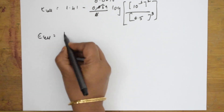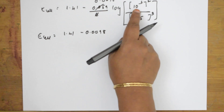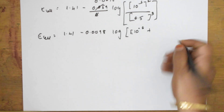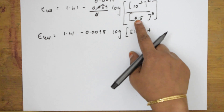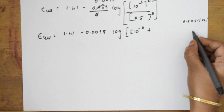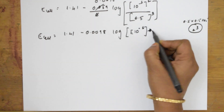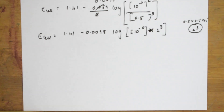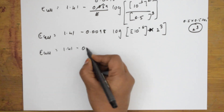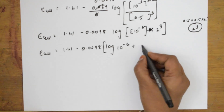So E_cell = 1.41 − 0.0098 × log[10⁻⁶ × 2³]. This can be written as log(10⁻⁶) + log(2³), which equals −6·log(10) + 3·log(2). Since log(10) = 1, this becomes −6 + 3·log(2). We memorized log 2 = 0.3010 yesterday, so 3 × 0.3010 = 0.9030.